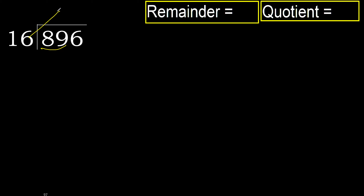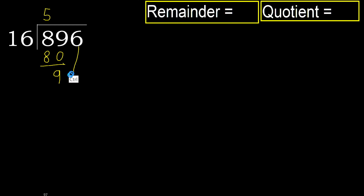16 multiplied by which number is nearest to 89 but not greater? 16 multiplied by 9 is 96, which is greater. Multiplied by 5 is 80, which is not greater. Subtract 9. Next.